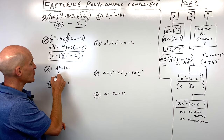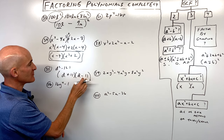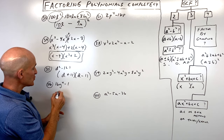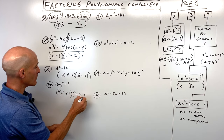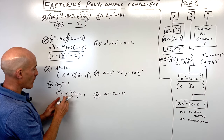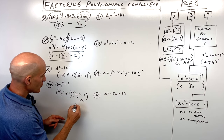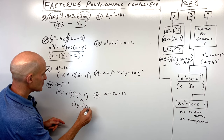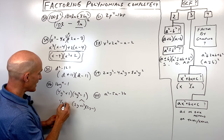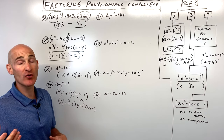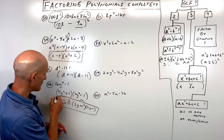Number thirty-five is a difference of two squares: d plus 11 times d minus 11, since 11 squared is 121. Number thirty-six is also a difference of two squares — 16y to the 4th minus 1. Factoring gives 4y squared plus 1 times 4y squared minus 1. But 4y squared minus 1 is again a difference of two squares: 2y plus 1 times 2y minus 1. The 4y squared plus 1 is a sum of two squares, which can't be factored over the real numbers.